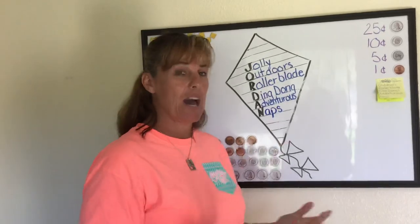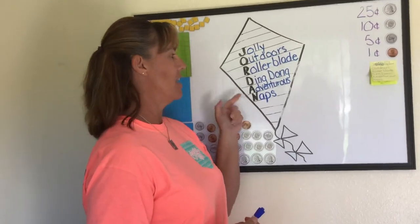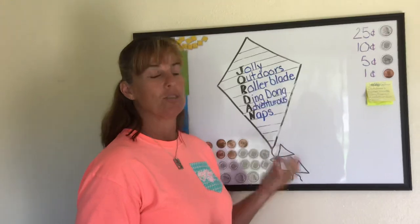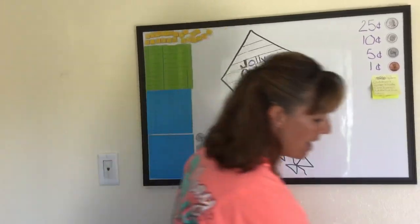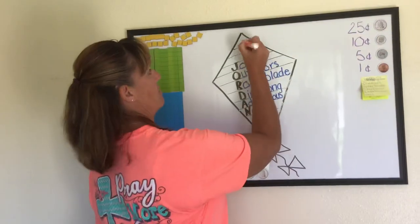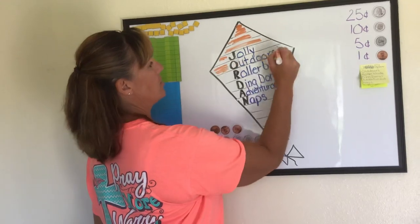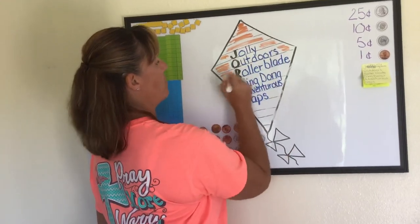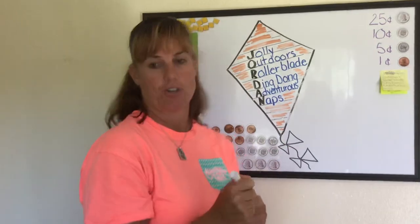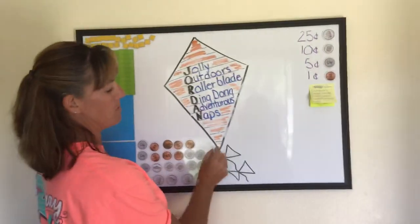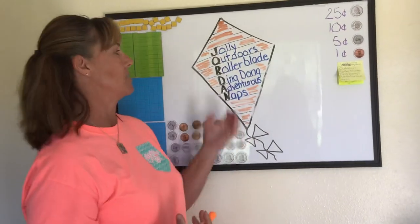So a kite to describe Jordan would be: jolly, outdoors, rollerblade, ding-dongs, adventurous, and naps. When you guys do your project, do your name and then color lightly the outside. You can decorate your kite and color it bright colors. I actually put some construction paper inside of your packet so you can make a little kite string, maybe even some bows. You can kind of decorate that kite.